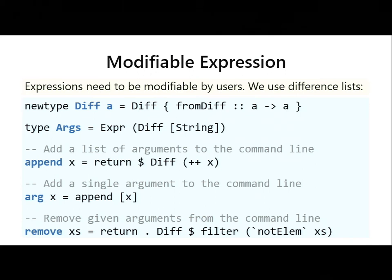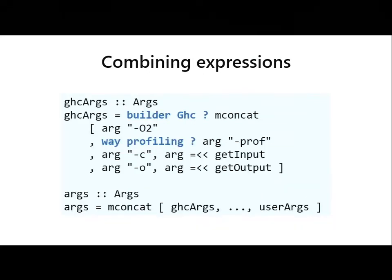We actually need something more complicated, because users would like to add their own command line flags and also remove flags we've added. So instead of readers producing lists of strings, we use difference lists — functions from list of strings to list of strings. We have convenient functions to append a list of arguments, append a singleton, or remove arguments from the command line. The final result: we always add O2 to GHC arguments; if the current way is profiling, we add dash-prof; we always add the input and output files. This whole expression is conditional on using the GHC builder. We put all command line descriptions in the same expression and attach user modifications to it — 'args' contains the full expression.